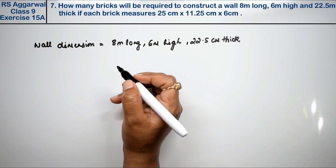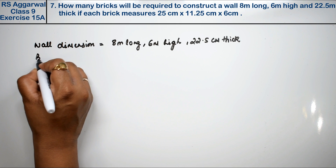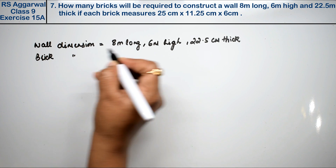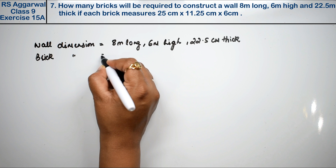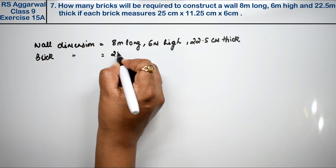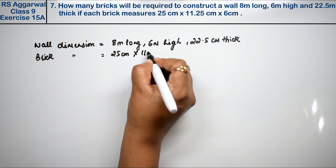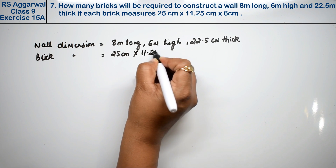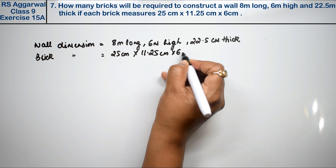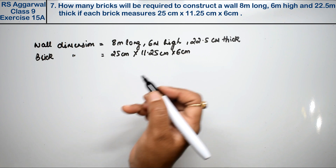If each brick measures 25 cm into 11.25 cm into 6 cm — these are the given brick dimensions.